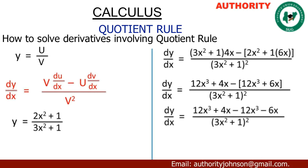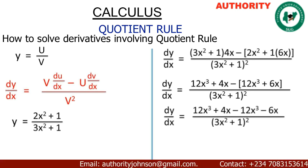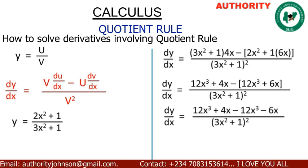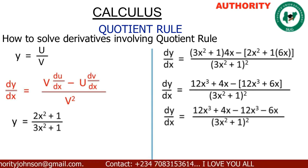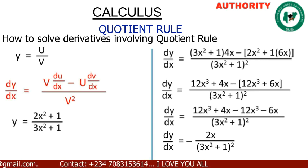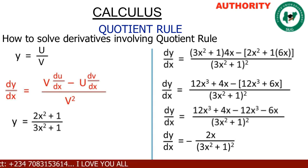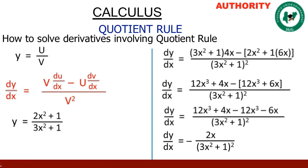So we have 12s³ + 4x − 12s³ − 6x, all over (3s² + 1) squared. The 12s³ and −12s³ cancel to give zero. Then 4x − 6x gives us −2x. Therefore dY/dx equals −2x over (3s² + 1) squared. That is the derivative of (2s² + 1) over (3s² + 1).